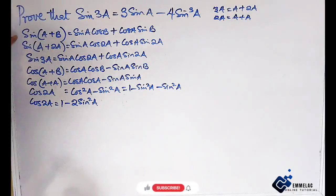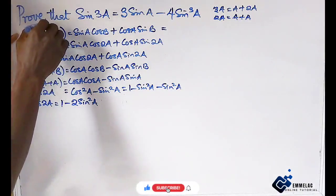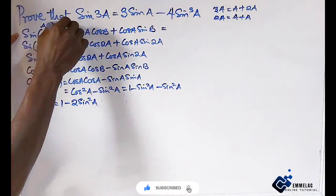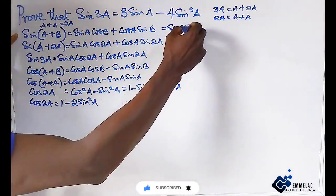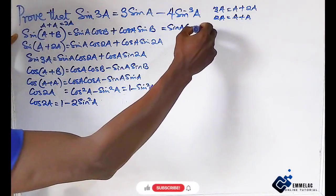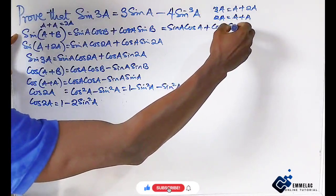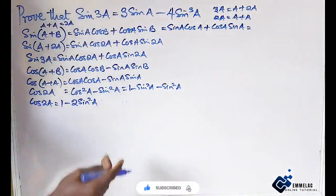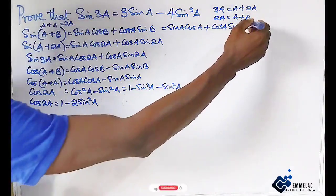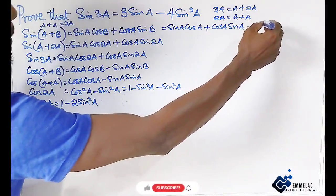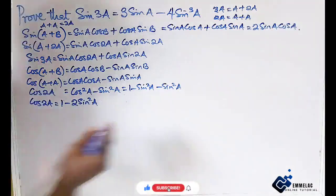Now let us find sine 2a. Following the same identity, if we represent 2a as a plus a, this gives us sine a cos a plus cos a sine a. We can see that these are common terms, so it gives us 2 sine a cos a. So sine 2a equals 2 sine a cos a.